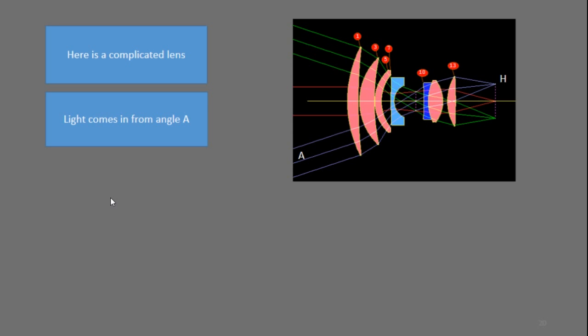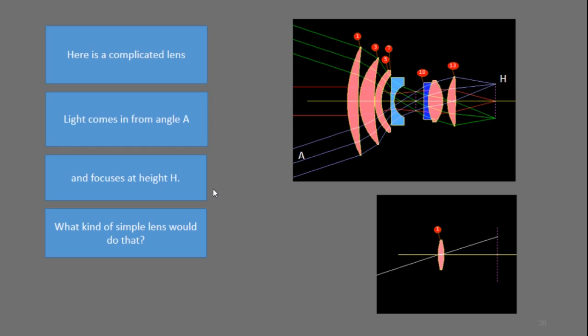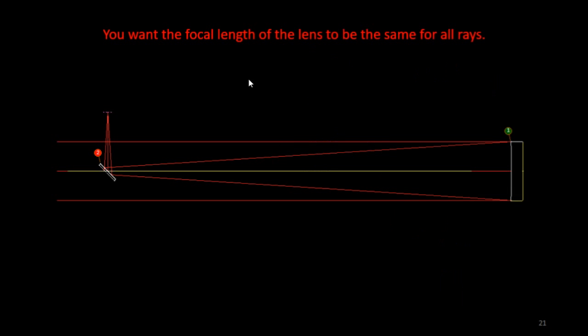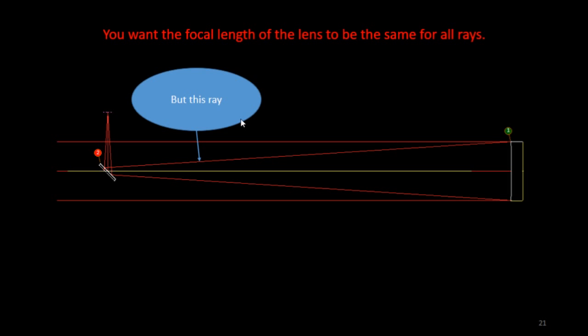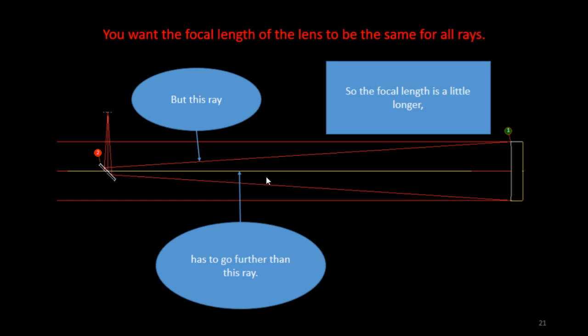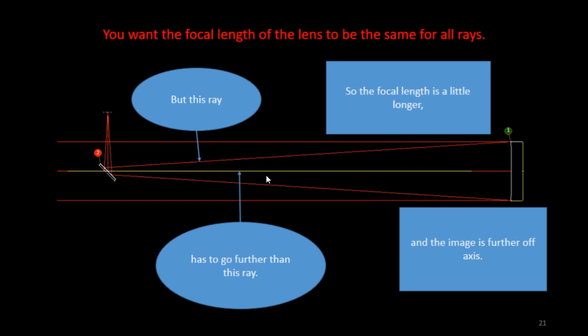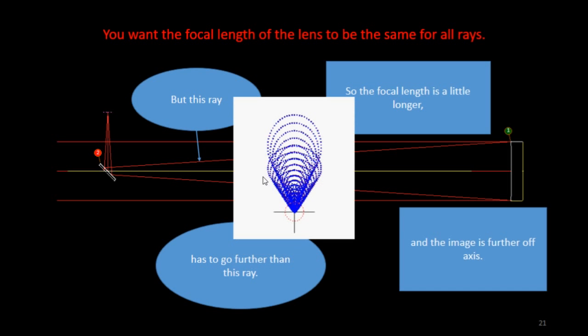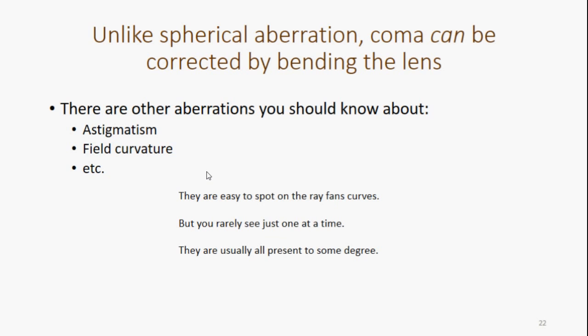Let's see here. This is a complicated lens. Light comes in from angle A, right there, focuses at height h. And you can ask, what kind of simple lens would do that? Well, there's a simple lens that will do that. The focal length is a distance from a thin lens to that image. In other words, it's right here. And you want the focal length of the lens to be the same for all rays. But in this, but this ray has to go further than that ray, which means the focal length is a little bit longer and the image is a little further off axis. And that's where you get your coma. Unlike spherical aberration, coma can be corrected by bending the lens.